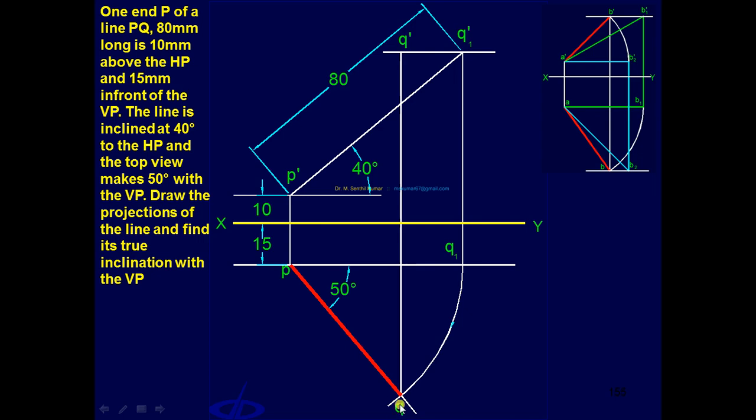Now draw a projector through Q. You will get Q dash on this locus. Draw a line joining P Q dash - that is nothing but the final front view. So you obtained the final front view and final top view directly.